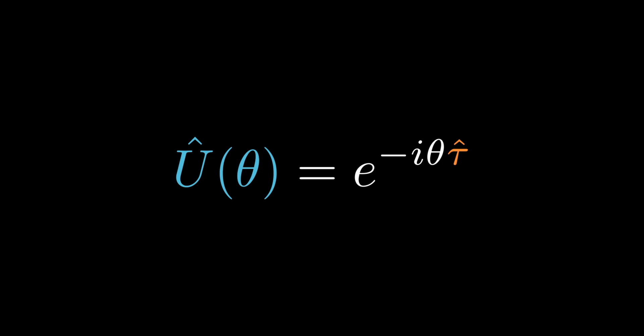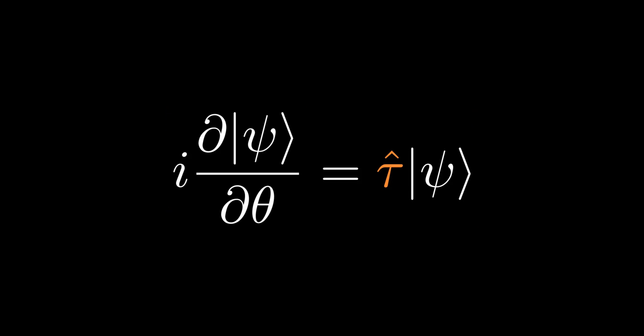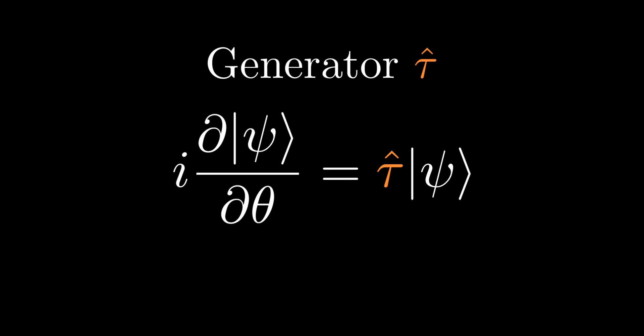Right-multiplying both sides by ket-psi, then differentiating with respect to theta and rearranging yields a key equation. Since tau is Hermitian, it may represent an observable, and this is indeed true. We have discovered that the operator representing the observable is not only the repository of the spectrum and definite states of that physical quantity, but also has another role as the generator of U and the transformation that U achieves.